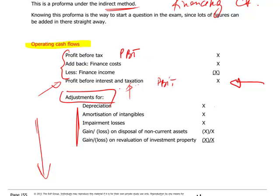Depreciation is based on the accrual concept — it matches the cost of non-current assets to the revenues they generate. However, the actual cash movement for a non-current asset occurs on acquisition when you pay, and on disposal if you receive money. So depreciation is purely an accounting entry with no cash flow movement. Since it appears as a minus in PBIT, to neutralize it you add it back with a plus. Similarly for impairment losses — they are a minus in PBIT, so you add them back to neutralize all non-monetary elements.